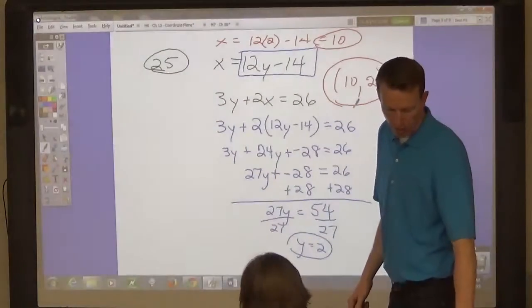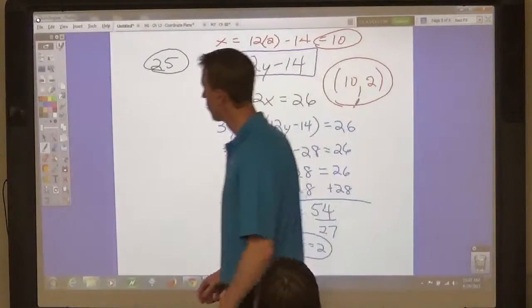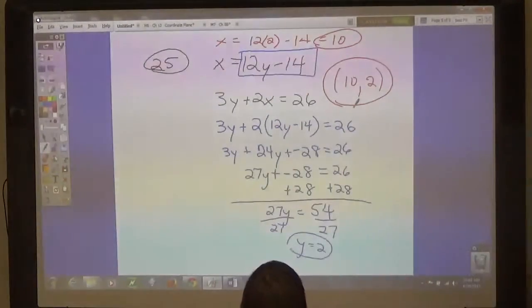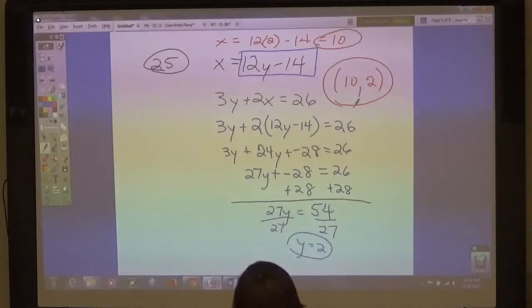So do 23 through 28 for tomorrow. 23 through 28. So you have three more problems you have to do on your own. If you didn't get all of the first three, then go back and watch this to copy them.